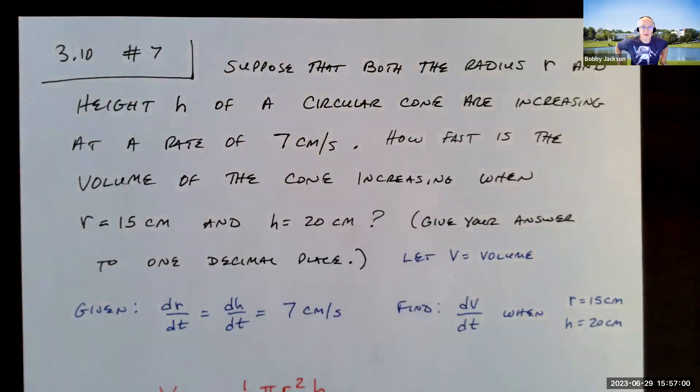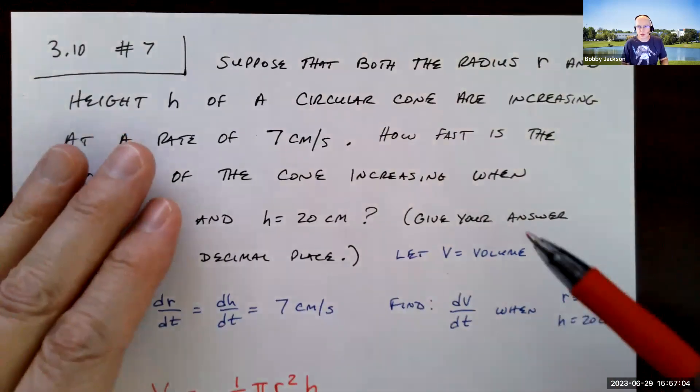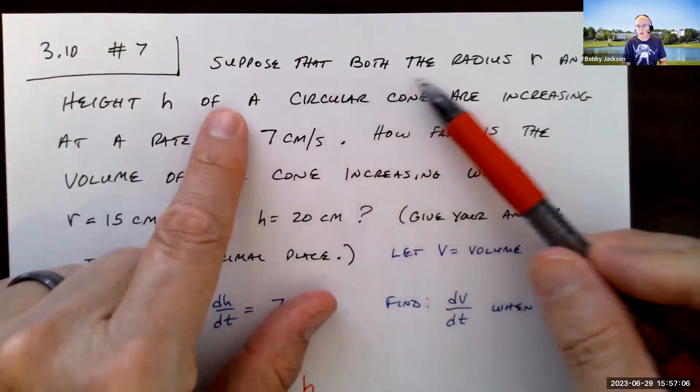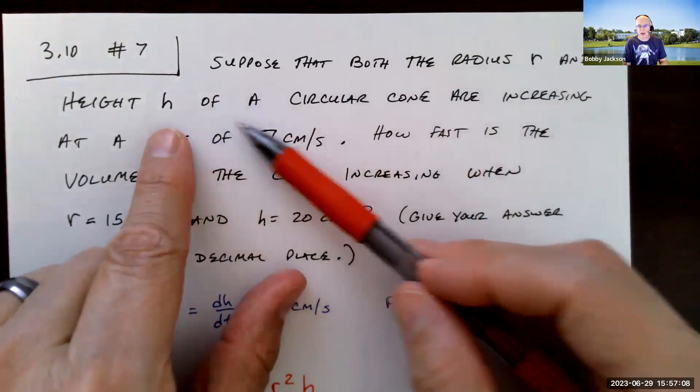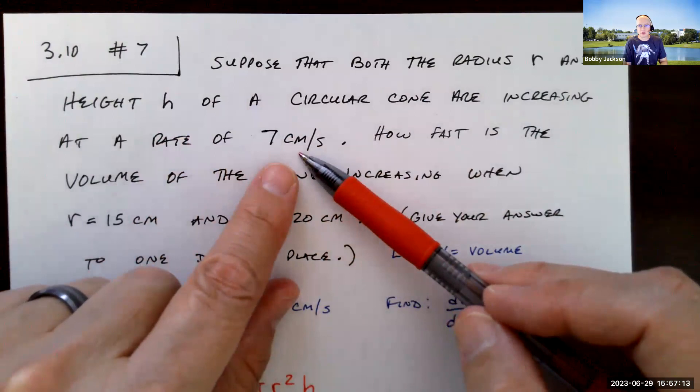Hey everyone, let's look at number 7 in section 310. Nice little related rates problem here. Suppose that both the radius r and the height h of a circular cone are increasing at a rate of 7 centimeters per second.